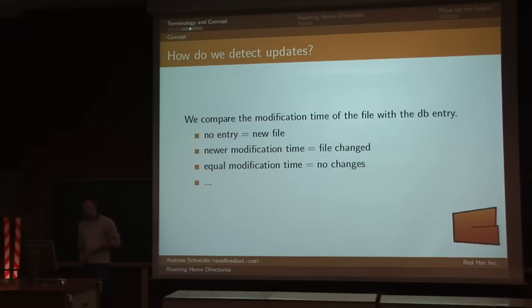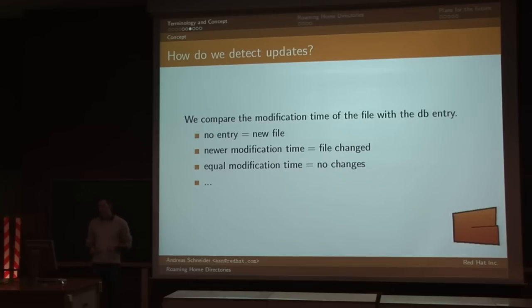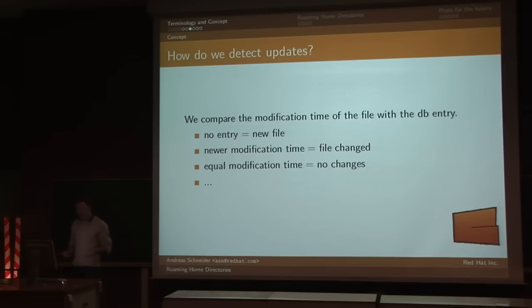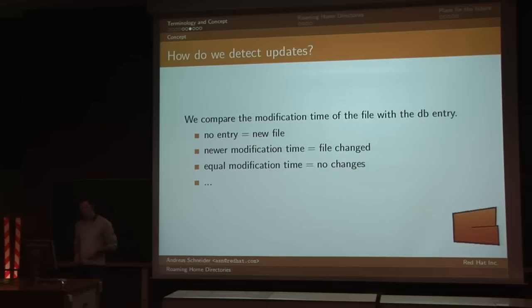Let's look at how updates are detected. We use the modification time to detect if a file has changed, and we have a database with an entry for each file we already synchronized. We compare the modification time of the file with the entry in the database. If there is no entry for that file, then we have a new file. If the modification time is newer, then the file has changed and needs to be synchronized. If it is equal, there are no changes. And if both files on both replicas — on the client and on the server — have changed, then you have a conflict.